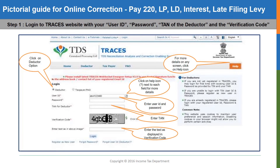After clicking on the login hyperlink, this page would be displayed. Here, click on the deductor button. Then enter your user ID, password, TAN, and verification code as displayed on the screen. After that, click on the button login. Now in case you have forgotten your user ID or password, please refer to our online videos in the channel to retrieve the same. The link for the videos is given in the description box.